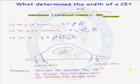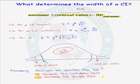So in summary, how can we shorten a confidence interval? One way is to decrease the confidence level. A second way is to increase the sample size. The two main things you can control in terms of the width of a confidence interval are the confidence level and the sample size.